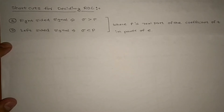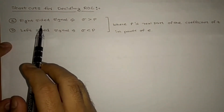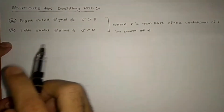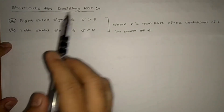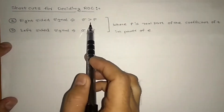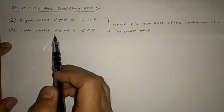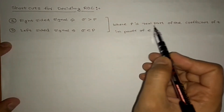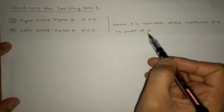Let us discuss shortcuts for deciding ROC. Here I am giving two shortcuts to directly draw ROC. The first one: a right-sided signal will have σ greater than p, and a left-sided signal will have σ less than p, where p is the real part of the coefficient of t in the exponent of e.